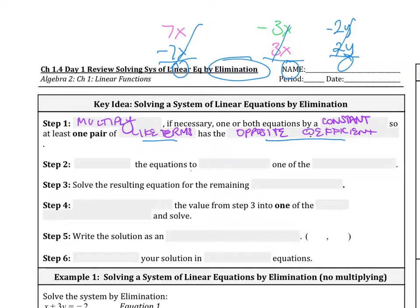Step 2, after we get it to have the opposite coefficient, then we're going to add the equations to eliminate one of the variables. Then you're going to solve the resulting equation for the remaining variable. For example, maybe you'll cancel out x's and then you solve for the y.